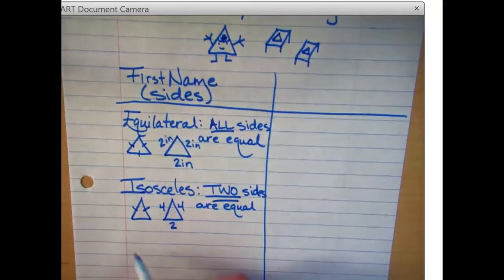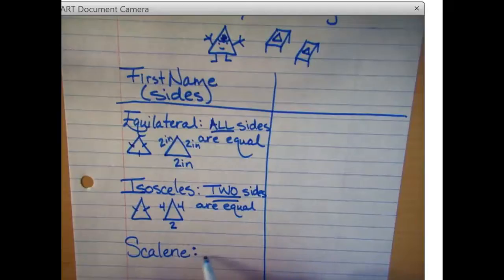Now the last name we're going to talk about, kind of unfortunate, his name is Scalene. This poor guy, he's all wonky. He has no equal sides. Every side is different.